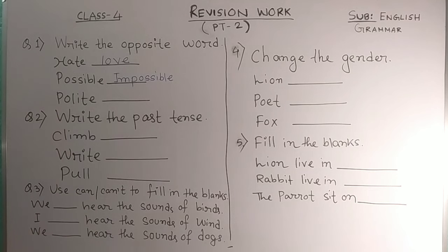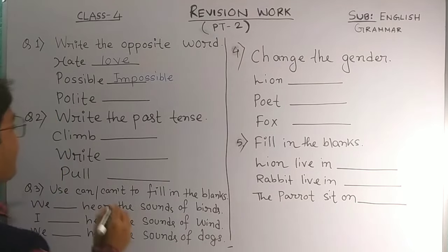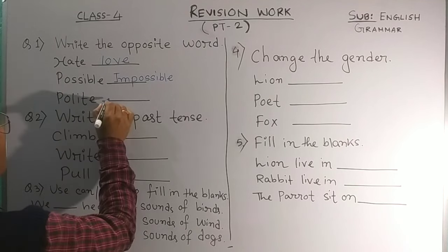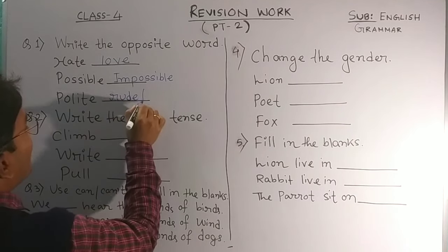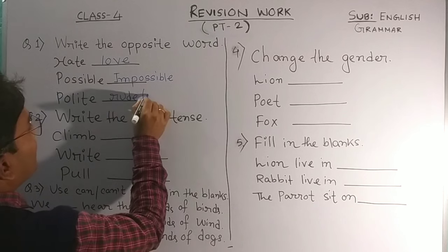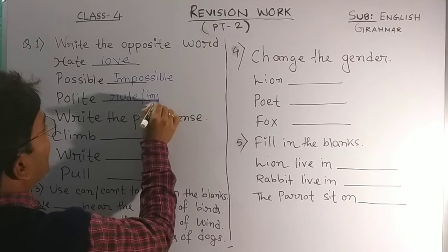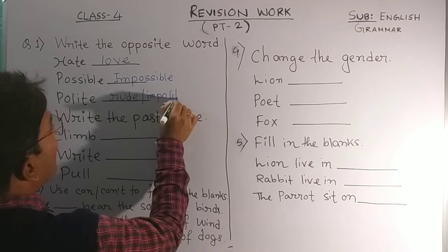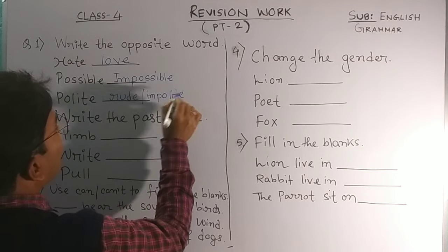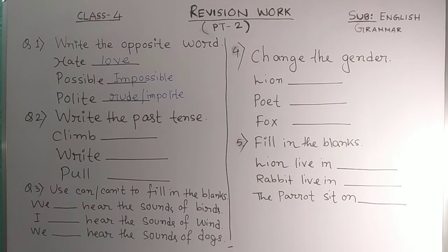Here is the word 'point.' For 'point' you can write two words. One is you can write 'root,' and also you can write 'implied.' These are the opposite words.